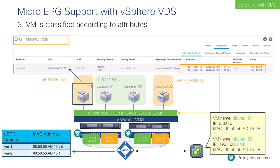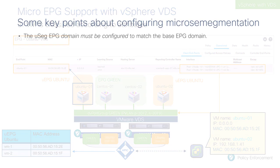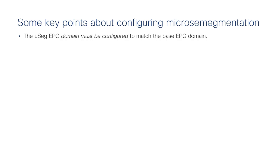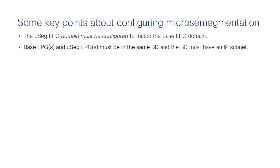You don't need to know the MAC address — you can classify based on VM name, and ACI uses the MAC address behind the scenes to steer traffic to the correct EPG. Key configuration points: the micro-segmented EPG domain must match the base EPG domain; the base EPG and micro-segmented EPG must be in the same bridge domain. The base EPG maps traffic to the bridge domain, and you then further classify that traffic into micro-segmented EPGs.